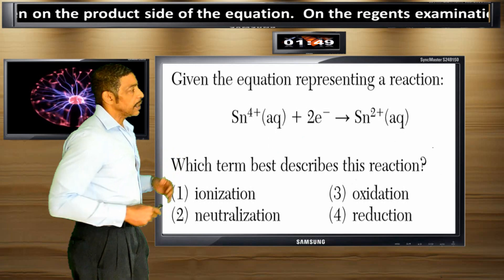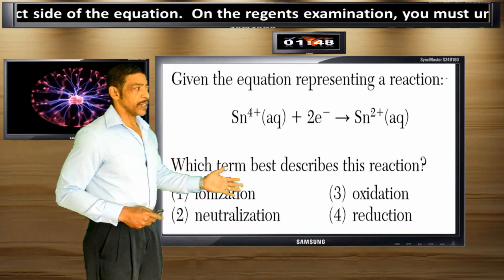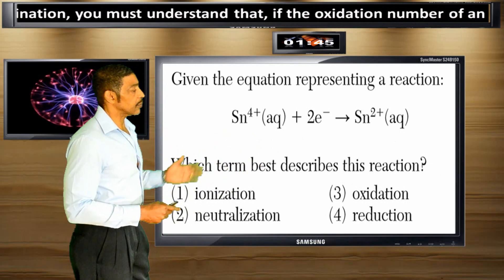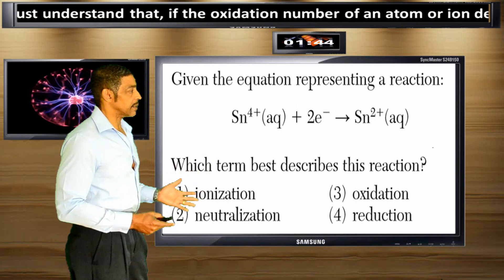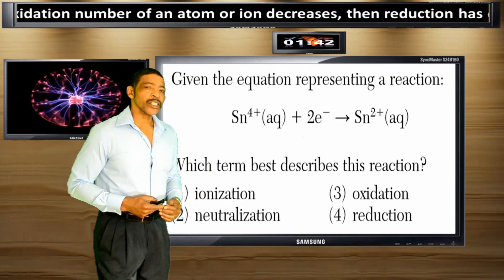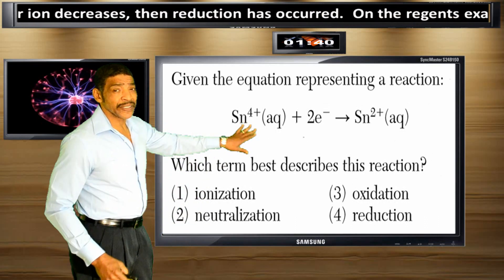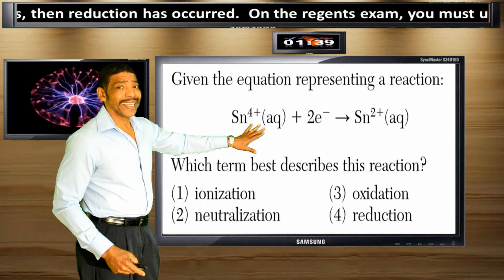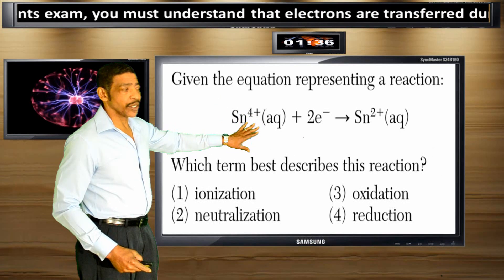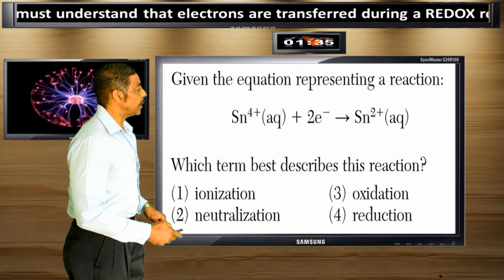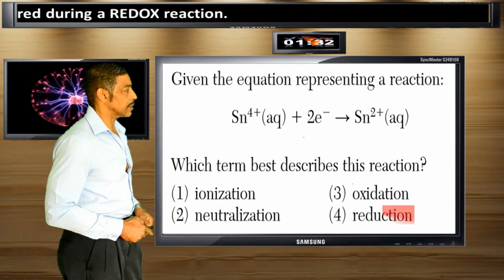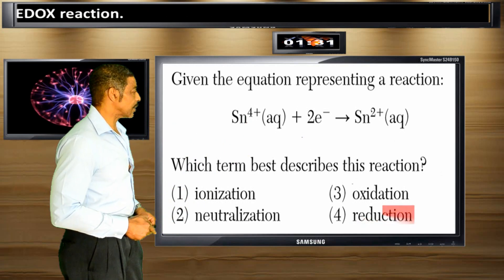Given the equation representing a reaction, which term best describes this reaction? When electrons are written on the reactant side of an equation, it means that a reduction is occurring. So the best answer to this question is 4: Reduction.